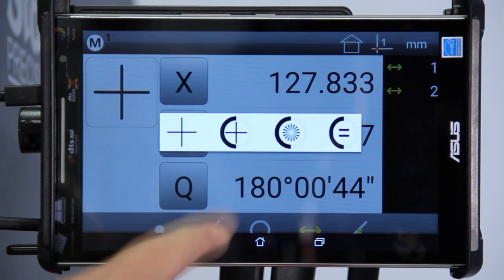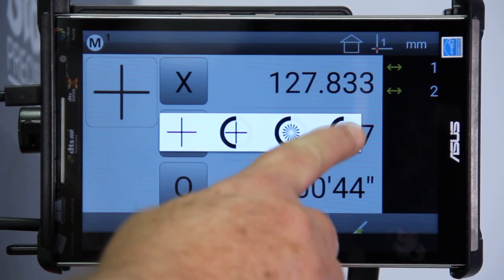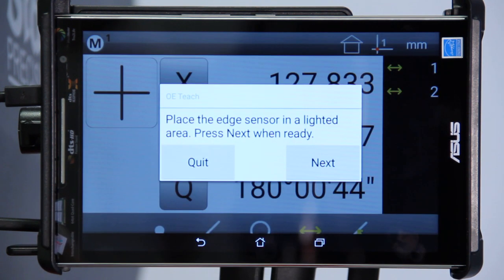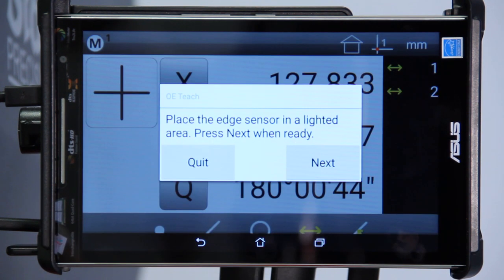On the right hand side is one that is a circle with an equal sign in it. Touch on that. That's your teach. It'll tell you to go from light to dark to light to dark. That will teach the edge on your screen.